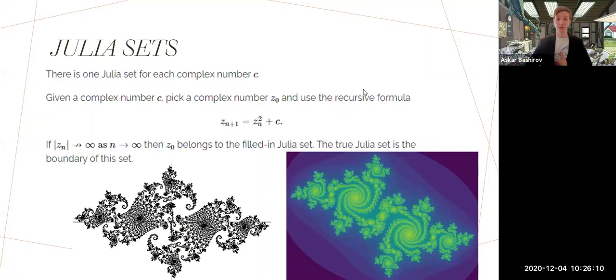Now it's going to be Julia sets. A Julia set is just a recursive formula that looks like this: zₙ₊₁ = zₙ² + c. For each number c there is such a nice picture. We pick c and check for z₀ - if the limit for this z₀ and this recursive formula doesn't go to infinity, then z₀ belongs to the Julia set and we draw it black. If it doesn't belong we draw it white.